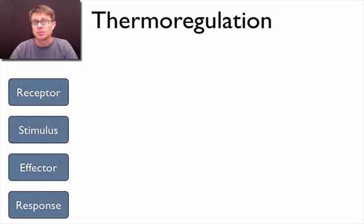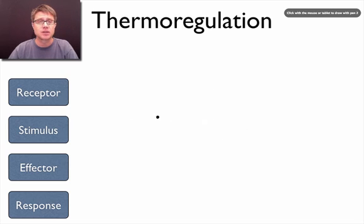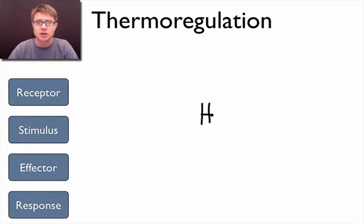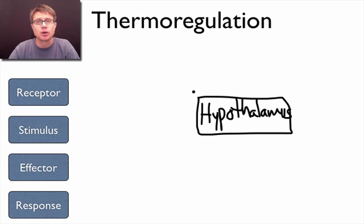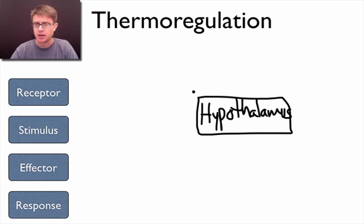Now let's try some real ones in biology — thermoregulation. We're going to put the receptor in the middle. The receptor in this case is called the hypothalamus. The hypothalamus is an organ — a lower portion of the brain connected to the pituitary — and it's going to sense your temperature. So let's start with the receptor right here in the middle, and we may want to start with temperature.